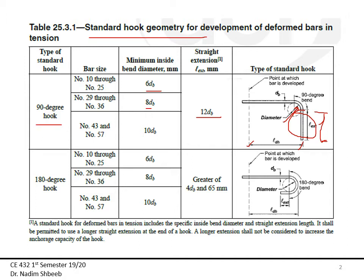This is a 90-degree hook. If I have a 180-degree hook, then the development length is this distance right here. The minimum bend diameters depend on the hook being used, and the extension length is as shown. We need to use this geometry if we want to apply the applicable equations and modification factors.